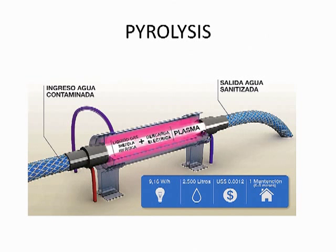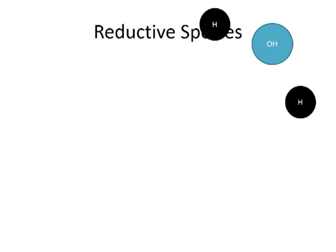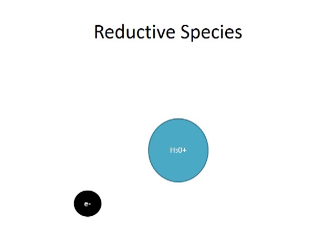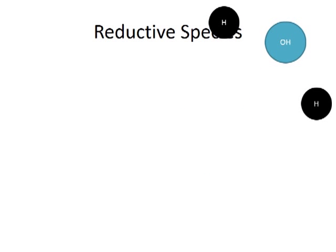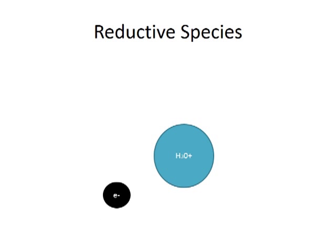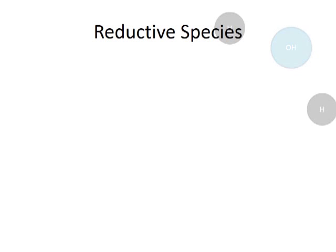Pyrolysis is the thermodegradation of organic compounds in the absence of oxygen. Heat comes from the plasma to degrade organic compounds. Reductive species: hydrogen radicals formed by collisions of electrons with water molecules are strong reductive species. These species undergo two reactions with organic materials: hydrogen addition to unsaturated bonds and hydrogen abstraction of saturated compounds.